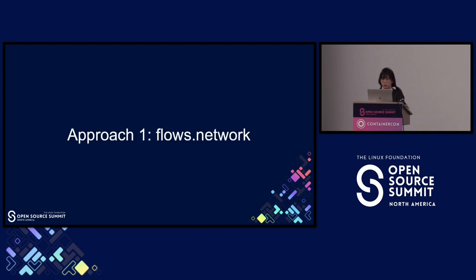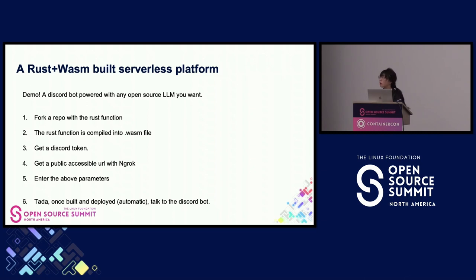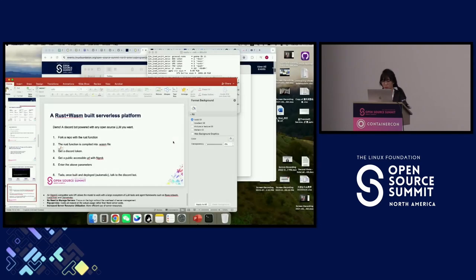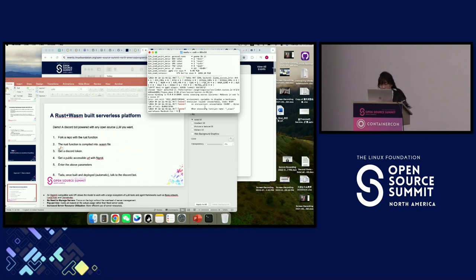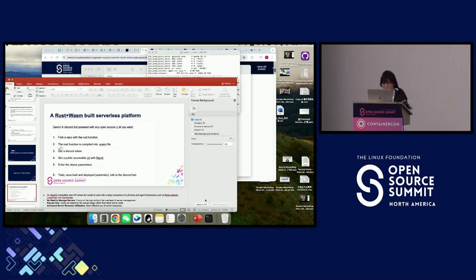Wasm functions as serverless AI workflows. You can use tools like LangChain or LlamaIndex, and there's also a similar framework called flows.network built with Rust and Wasm. We'll do another demo using flows.network to write a serverless AI function.